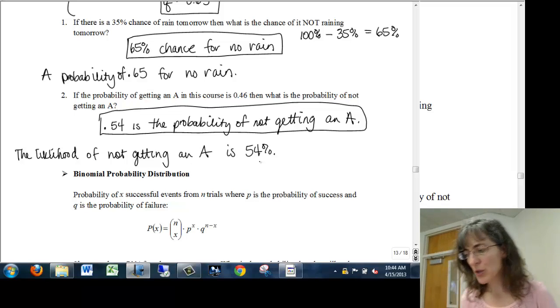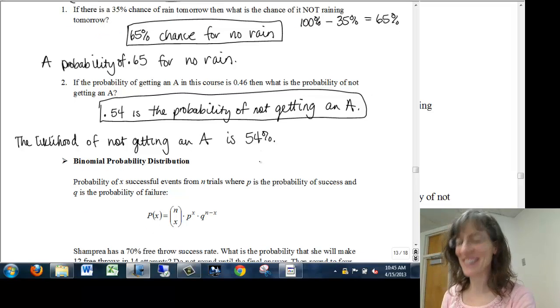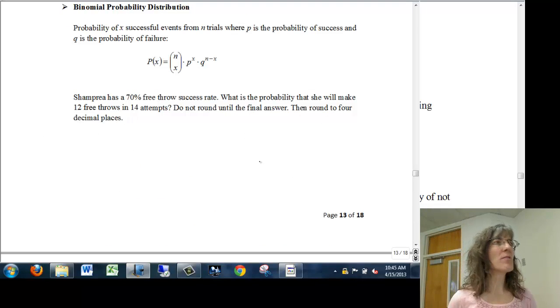Okay, so there we are. The likelihood of not getting an A is 54 percent. For your class, it's much, much lower. So just keep going. You're doing great. All right. We have one more formula that we want to look at.